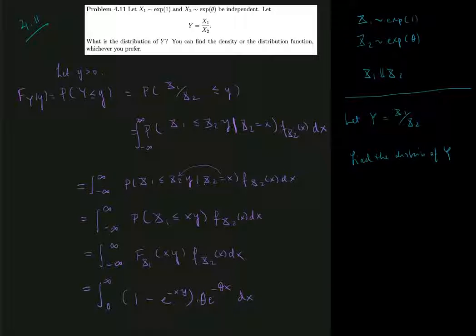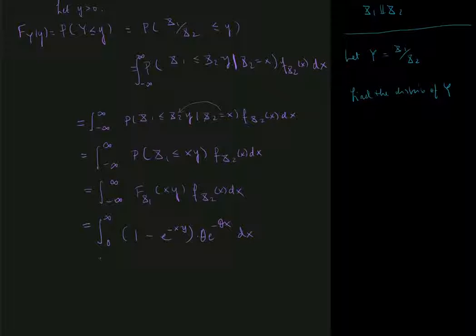And that is just a multiple that we have there. So this is what I have. And I can see that this actually splits up into two things, right? Because on the one hand, I have 0 to infinity of theta e to the minus theta x dx. And then the other integral that splits up into is e to the minus xy multiplied by e to the minus theta x. And we also have another theta in here, dx.